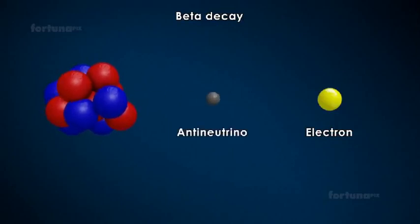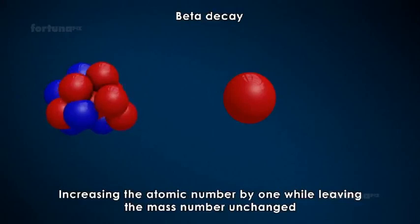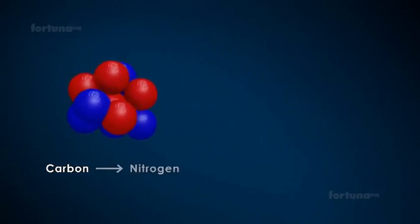During beta decay, an unstable nucleus will emit an energetic electron with a relatively small mass and an anti-neutrino with little mass. During this decay, a neutron will be converted into a proton, thereby increasing the atomic number by 1 while leaving the mass number unchanged. Consider an atom of carbon with 6 protons. It will undergo beta decay and become an atom of nitrogen.